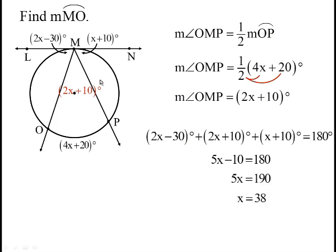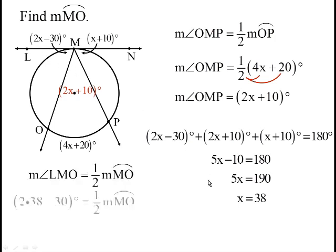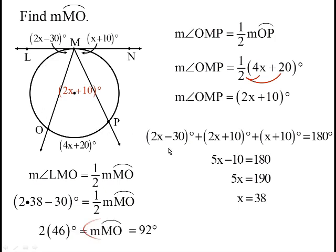Now, I'm interested in arc MO. I know this angle right here, LMO, is 2x minus 30, and now that I know x is 38, I can figure out what that angle is, and then the arc will just be double that. So it'll be 2 times 46 — 92 degrees.